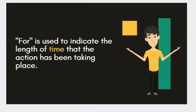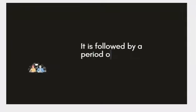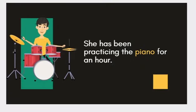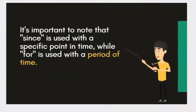For is used to indicate the length of time that the action has been taking place. It is followed by a period of time. For example: 'They have been working on the project for two weeks.' 'She has been practicing the piano for an hour.' It's important to note that since is used with a specific point in time, while for is used with a period of time.